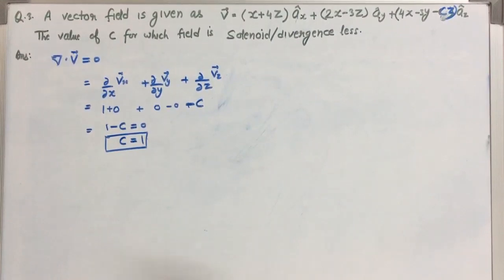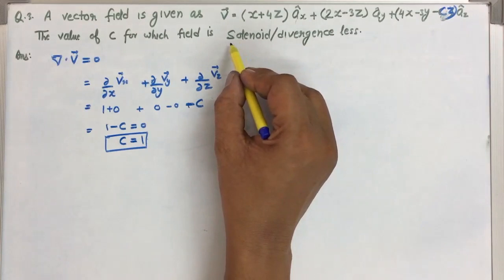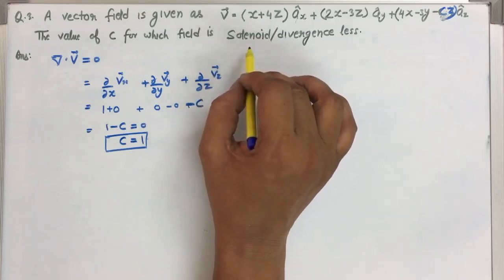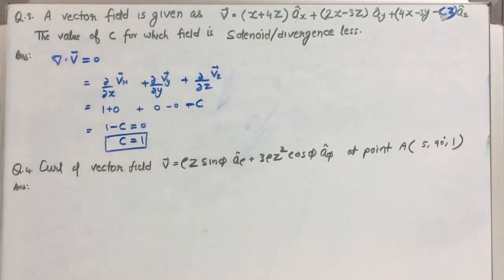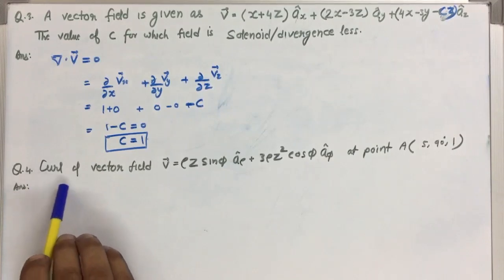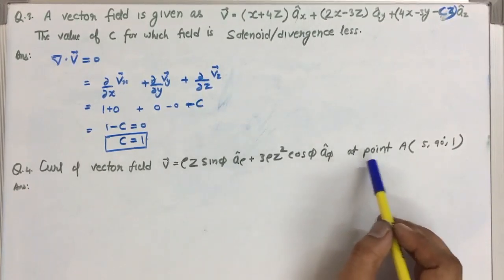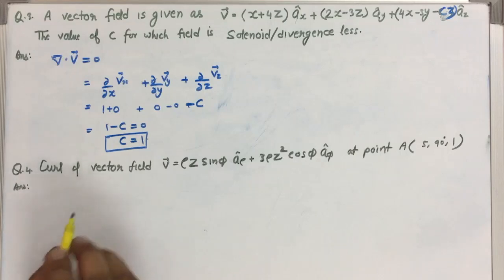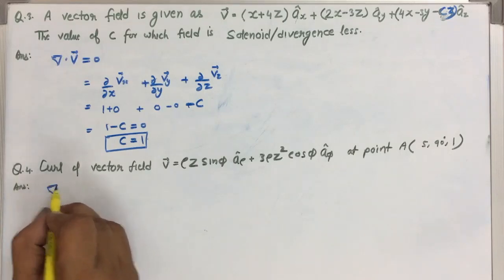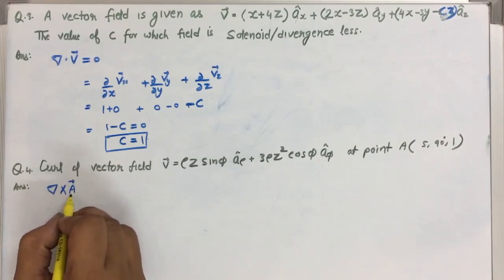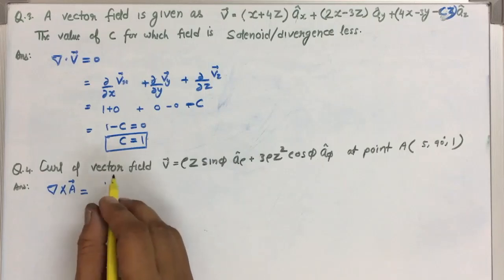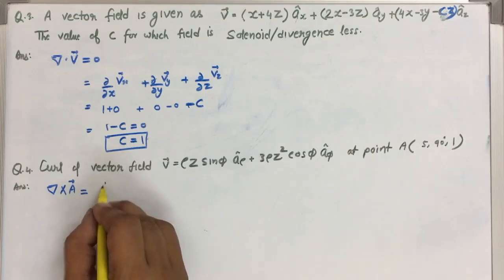The important point here: in exam questions — most probably in a gate exam — if it is asked that a field is solenoidal, it means you have to find that the divergence equals 0. Now, the next problem is related to curl. The problem asks for the curl of vector field V at a given point.